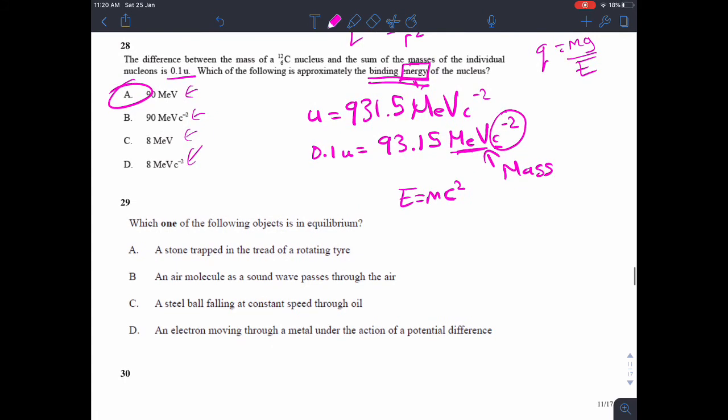Question 29. Which one of the following objects is in equilibrium? A stone trapped in the tread of a rotating tire. Well, that's in circular motion. So there must be an acceleration towards the centre of the circle. So it can't be that. An air molecule as a sound wave passes through the air. An equilibrium position is exhibiting simple harmonic motion as the sound wave passes through the air around an equilibrium position. So it's not B because that would be experiencing acceleration as well. A steel ball falling at a constant speed. The key word there is constant speed. Remember, resultant force is equal to mass times acceleration. If it's a constant speed, then there's zero acceleration. And so there must be zero resultant force. So it must be in equilibrium. So C is your correct answer. And just to check, option D, an electron moving through a metal under the action of a potential difference. Well, if it's under the action of a potential difference, then it's being given some energy and it is accelerating through the metal. And so D is an incorrect answer as well.